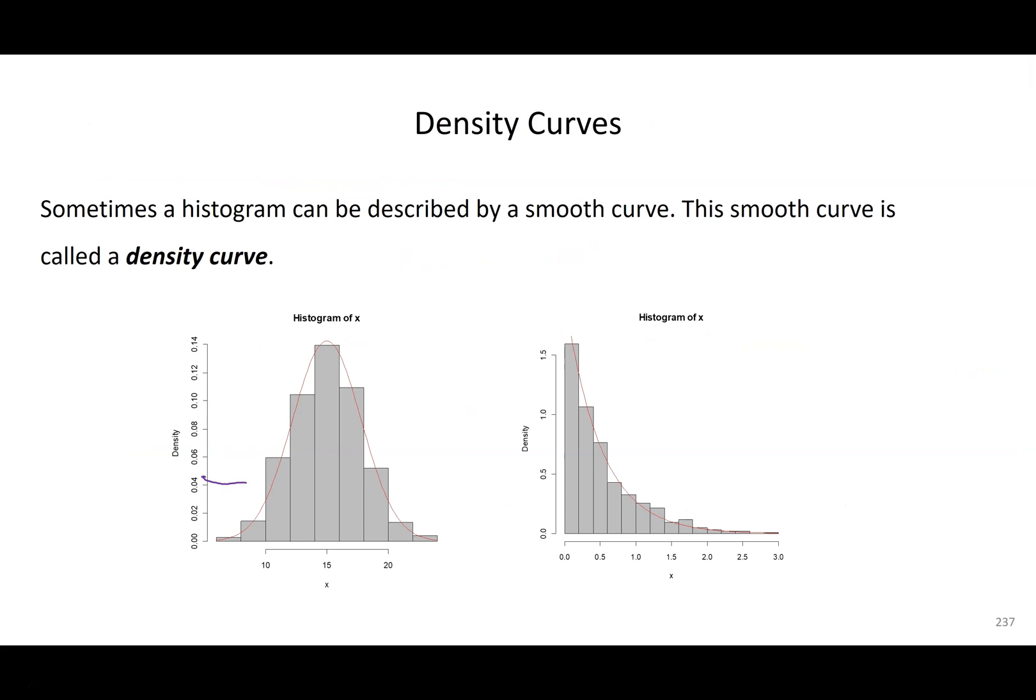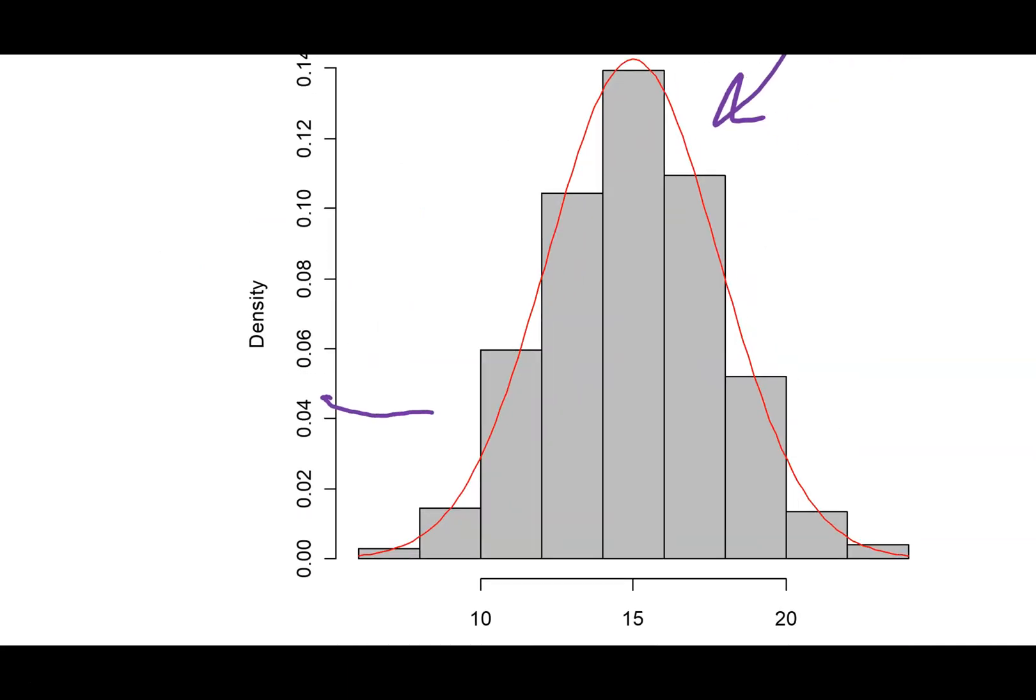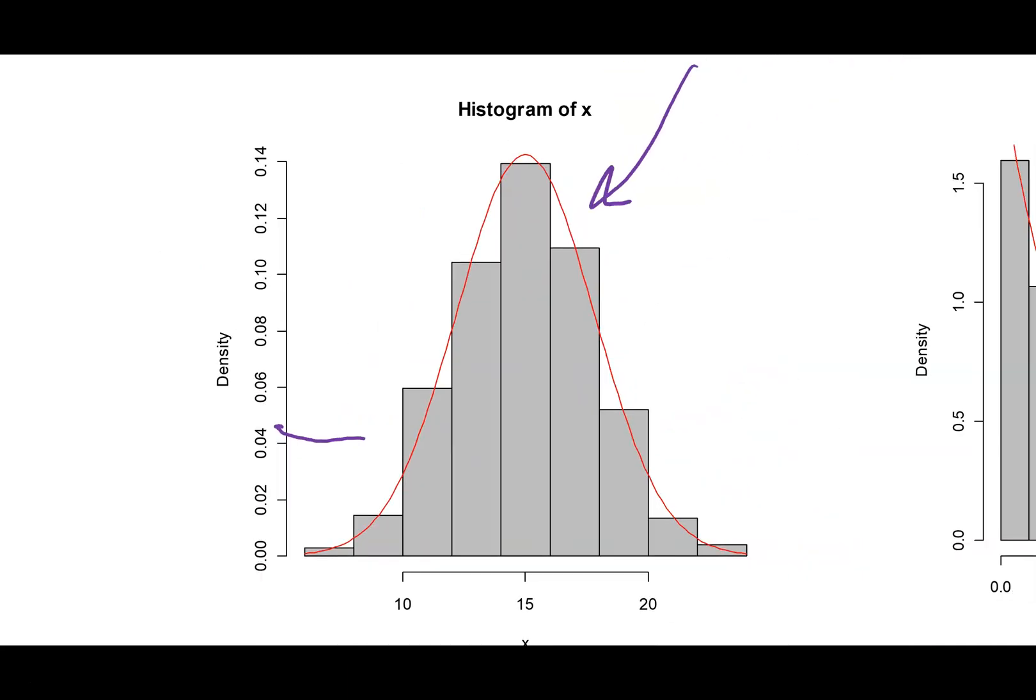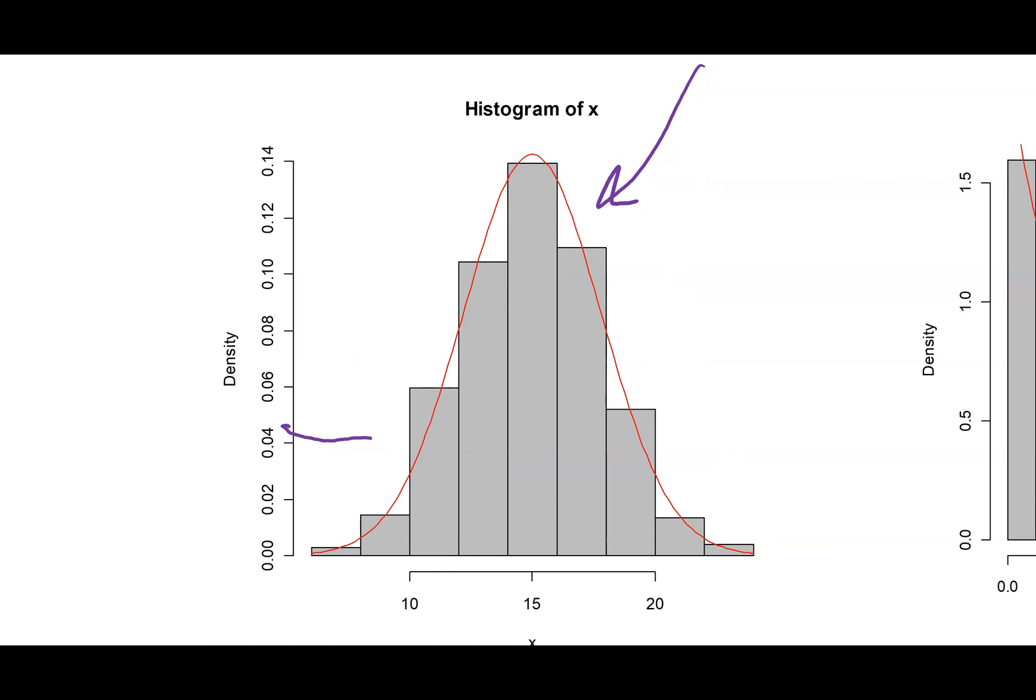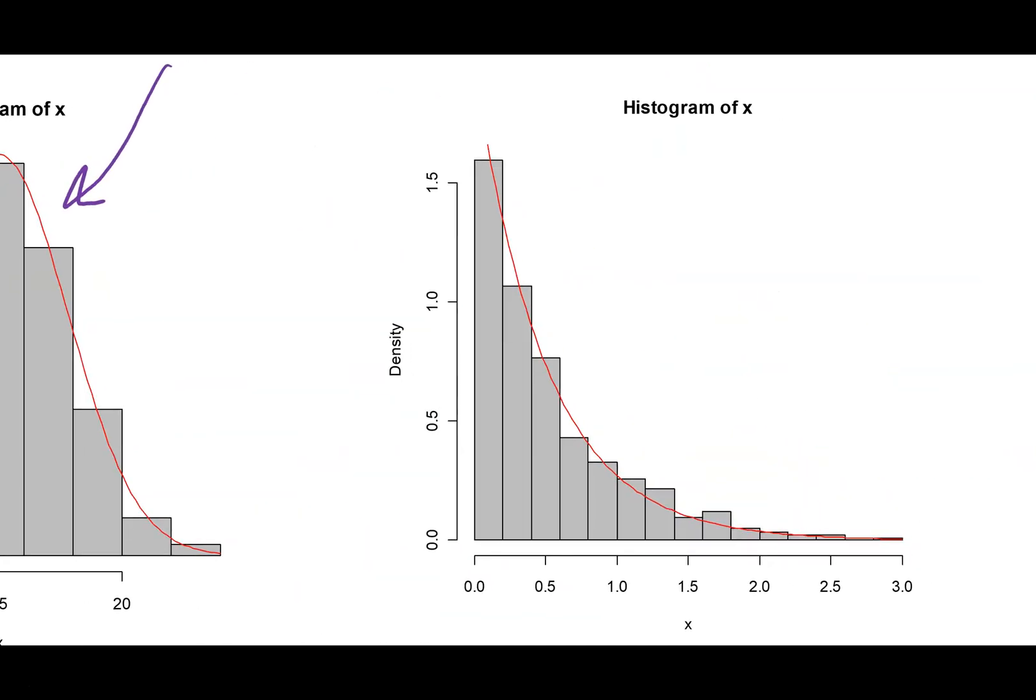So here are a couple histograms with density curves drawn over them. We have the histogram, which are the gray bars. And then if we zoom in, there is a red curve fit to that. Similarly, if we look over here, here's a histogram, a red line was fit to that as well. So those are density curves.